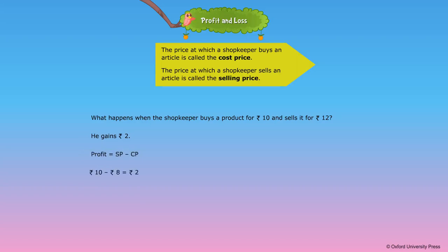When the shopkeeper buys a product for Rs. 10 and sells it for Rs. 8, he loses Rs. 2. When the cost price is more than the selling price, the difference is called the loss. Loss = CP − SP.